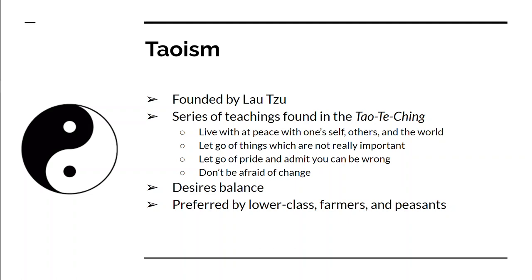Then there is Daoism, associated with Lao Tzu. It's about living at peace with yourself and with the world around you. Instead of fighting against life or against others, just understand that you can't control some things. Instead of saying you're right all the time, admit that you can be wrong. Instead of being prideful, admit that you can learn from others. And instead of hanging on to tradition, admit that you can change. This is going to be preferred by lower class people — the peasants and farmers — because they can't control what happens to their life and have to go with the flow.